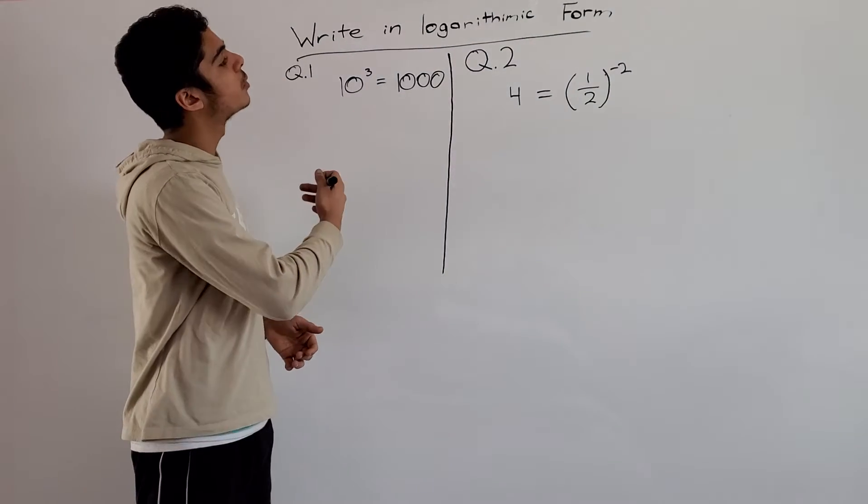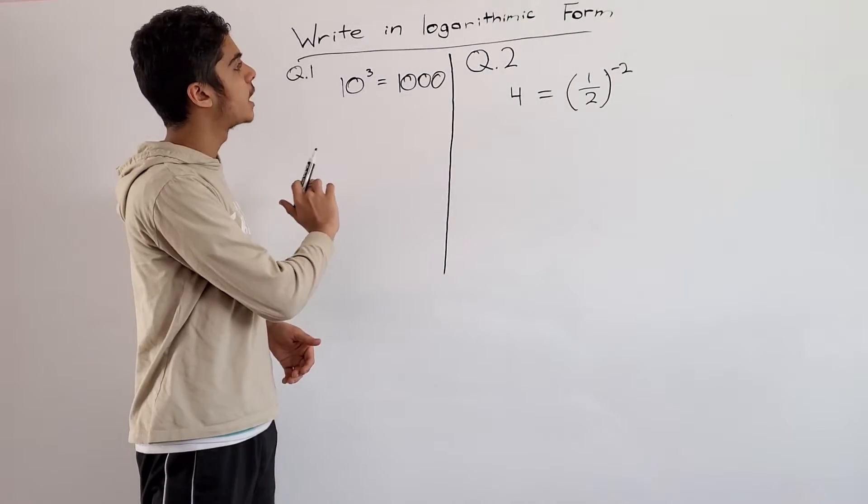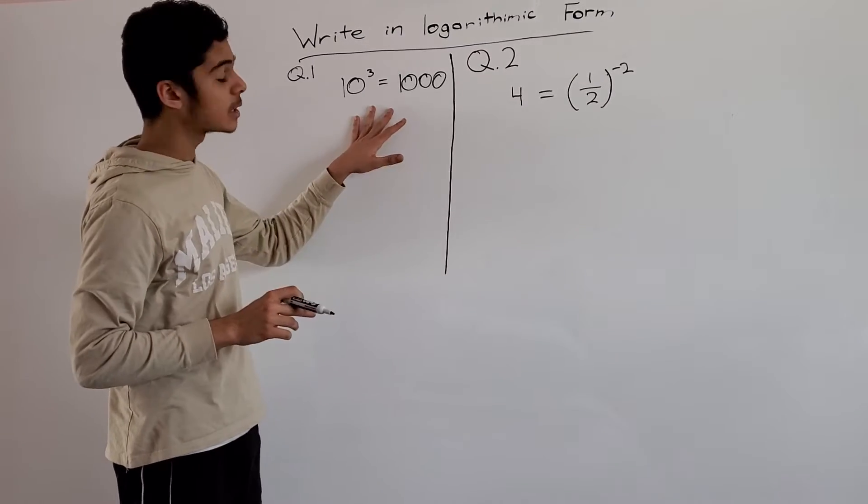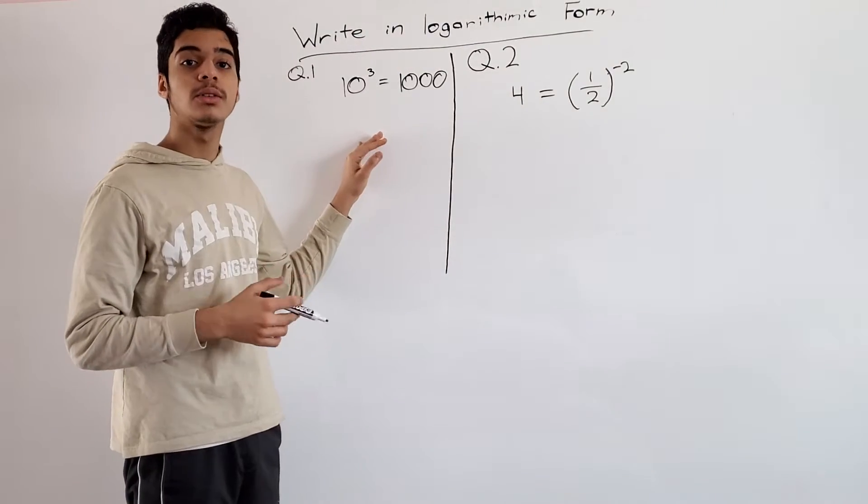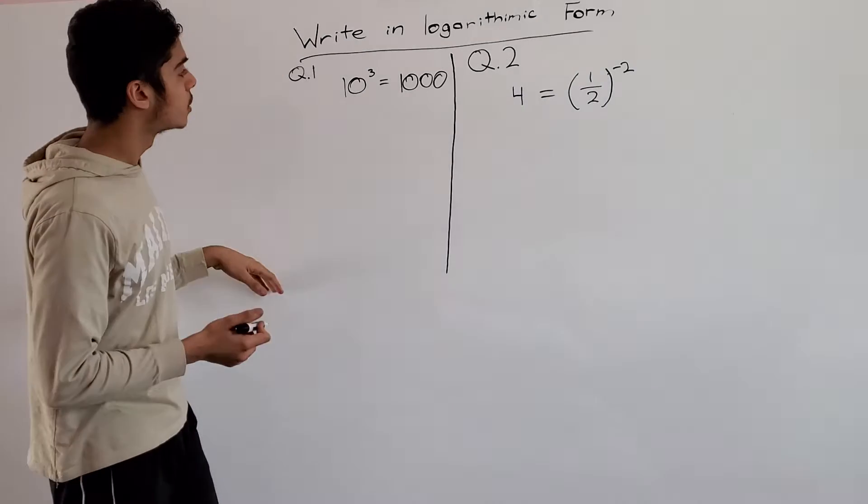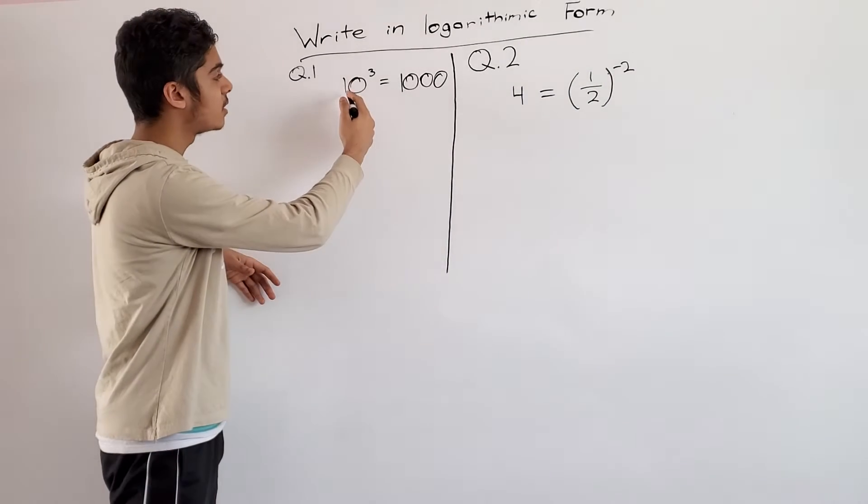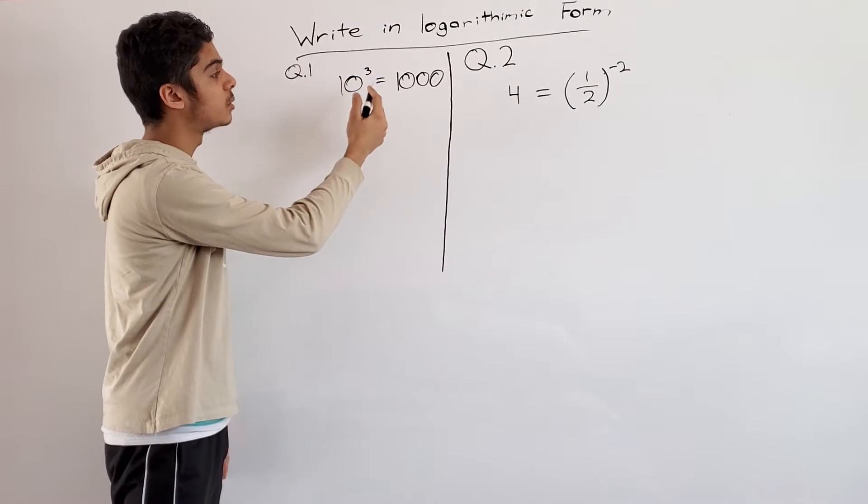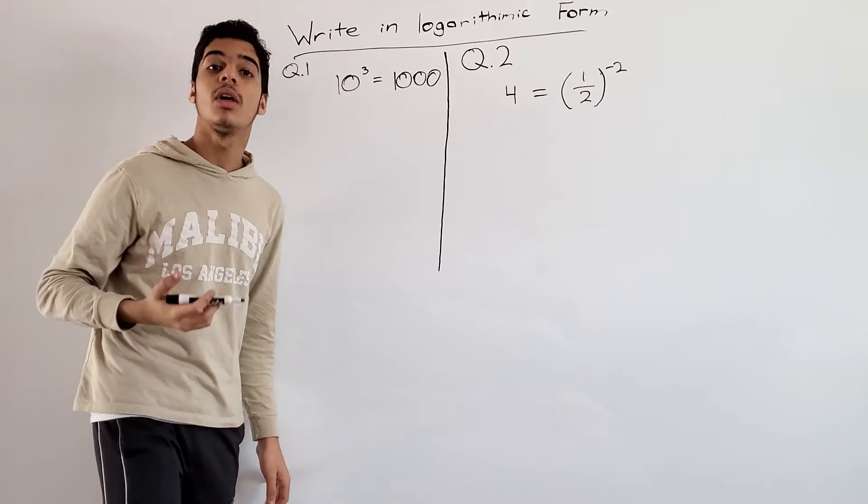We're going to be continuing with logarithmic equations and making these exponential equations into logarithmic form. We see this is 10 to the power of 3, that's equal to 1,000. Now how do we write this in log form?